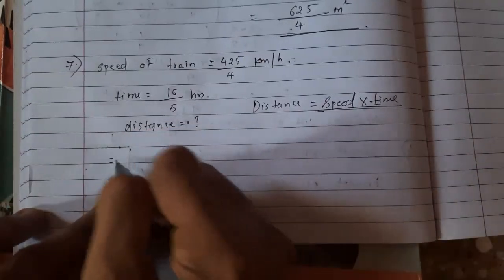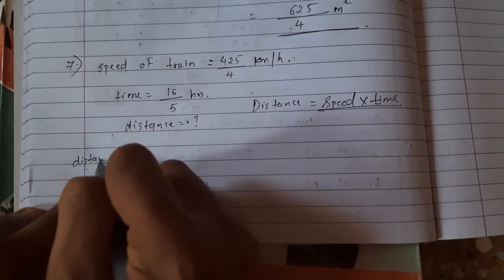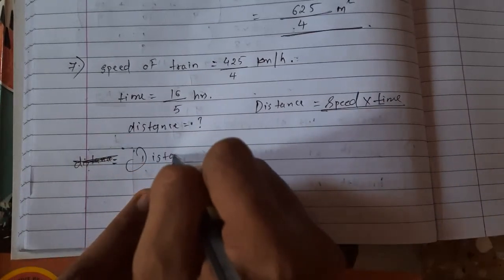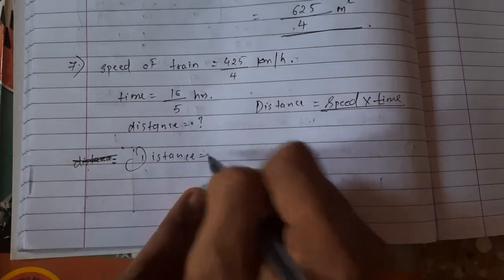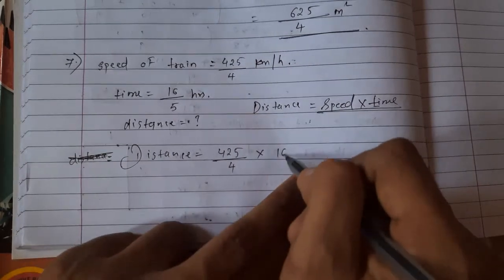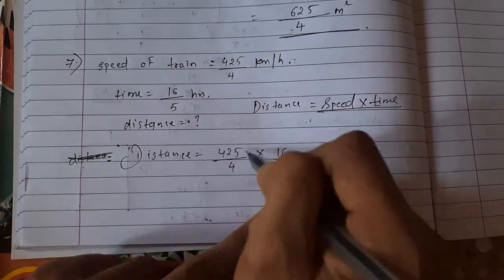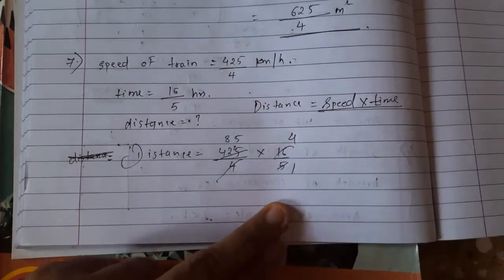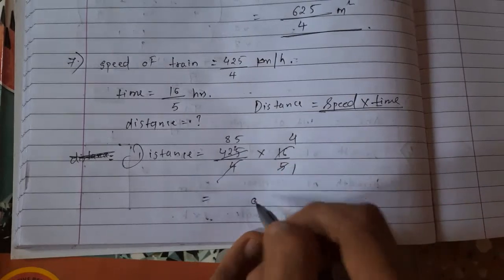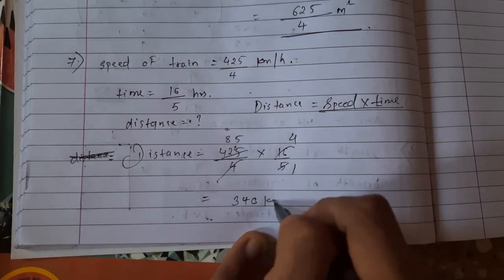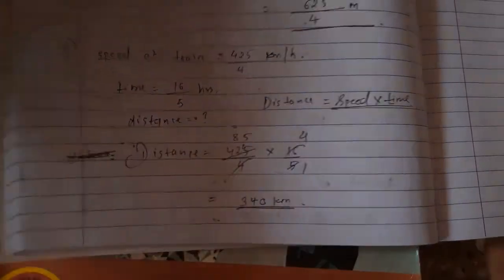Distance equals speed 425 upon 4 into time 16 upon 5. 5 ones are 5, 5 eights are 40, 5 fives are 25, 4 ones are 4, 4 fours are 16. Multiply this both. 4 fives are 20, 32 plus 2. So 340 kilometers is distance. Next question we will solve.